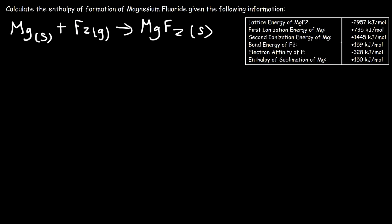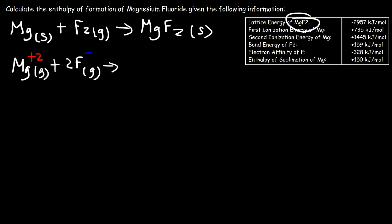The first thing we need to do is write the reaction that corresponds to the lattice energy for MgF₂. The lattice energy is the energy change that occurs when gaseous ions react together to form a solid ionic compound. In the case of MgF₂, the gaseous magnesium²⁺ ion plus 2 gaseous fluoride ions combine to produce 1 mole of solid MgF₂. The energy change for that reaction is −2,957 kJ/mol.